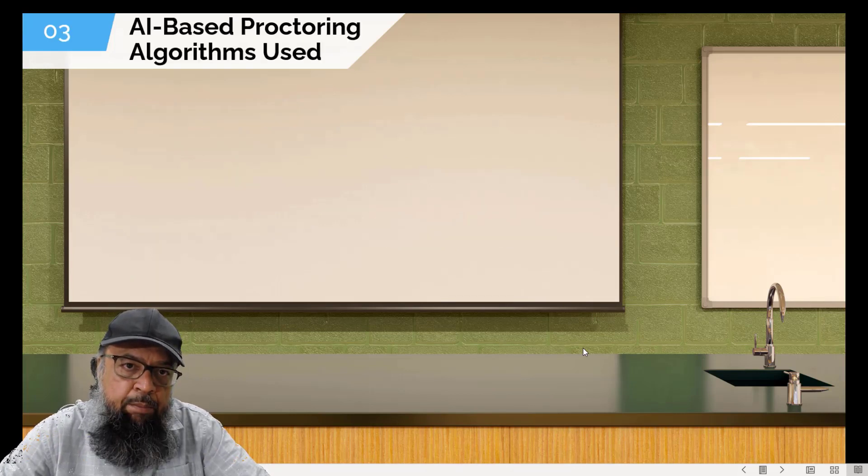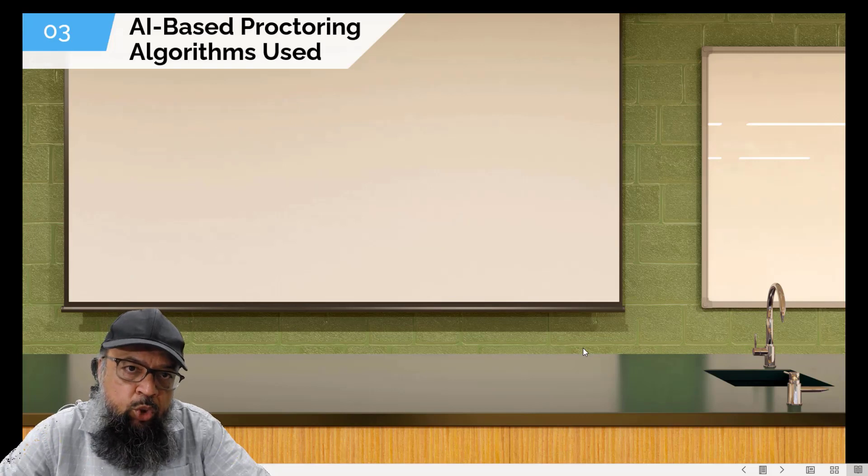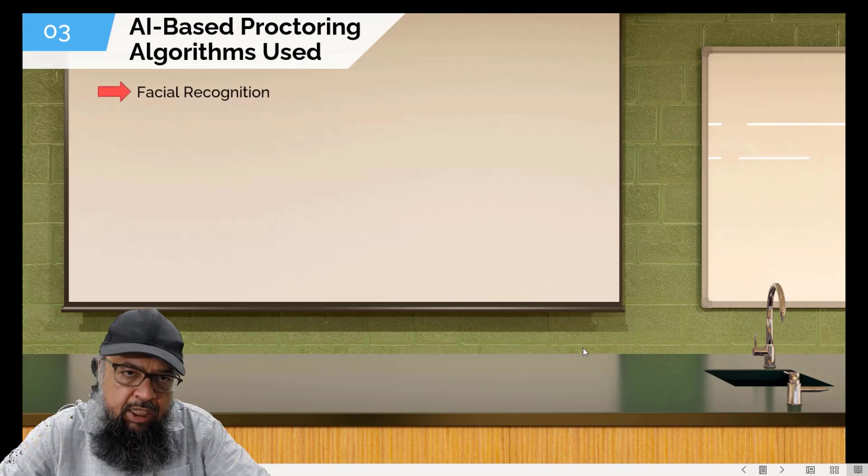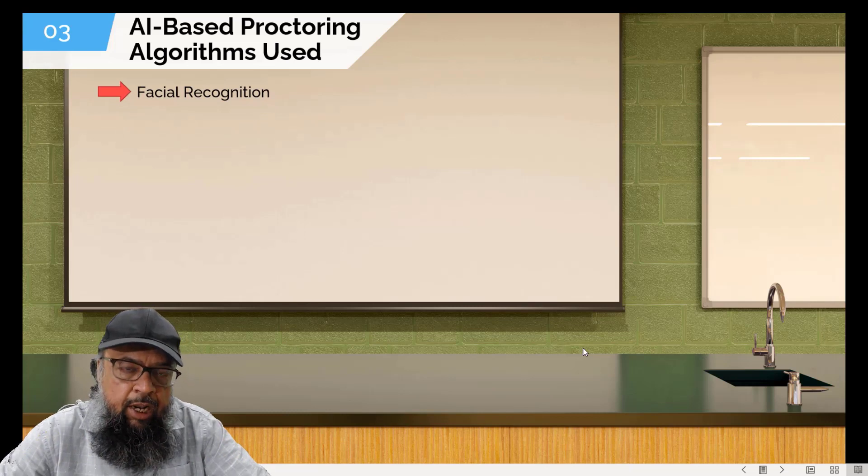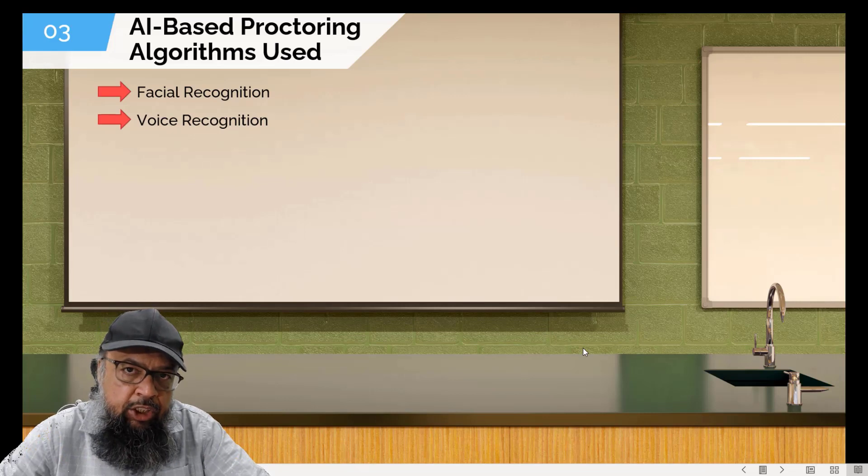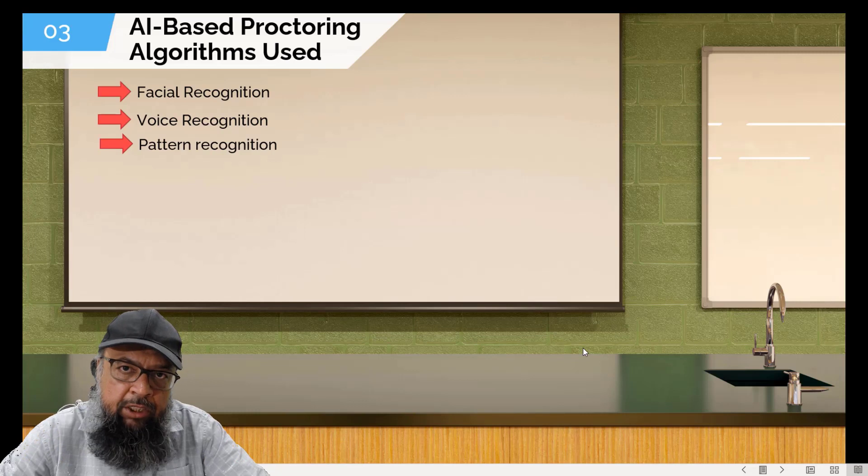And now let's see how AI-based proctoring tools work. These tools work on various algorithms that can be divided into these classes: facial recognition, where the algorithm tries to identify or match the face of the student with the photo on file or during the exam to verify identity; they also use voice recognition technologies to detect extra voices; then pattern recognition.